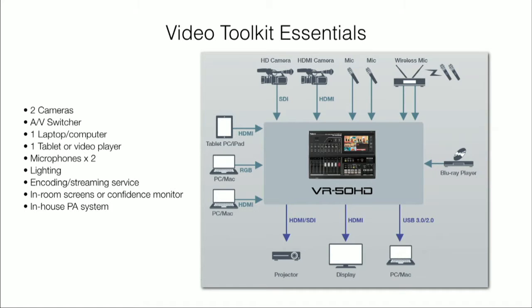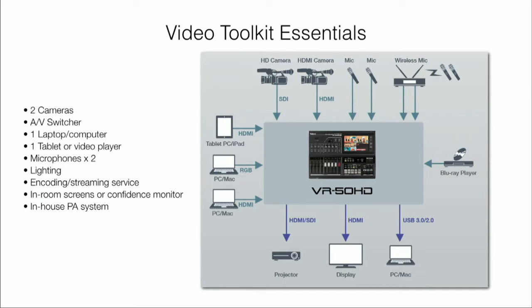For the video toolkit essentials for streaming corporate communications, we believe you need at least two cameras for different points of view, an integrated audio and video mixer/switcher, a laptop for graphics or streaming, maybe a tablet for playing video content, a couple of microphones to mic your talent, some lighting, encoding and streaming services to get your content to your audience, and a screen plus PA system for events with a studio audience.